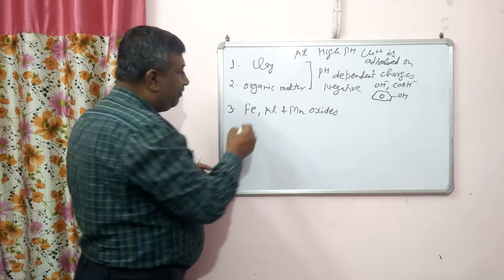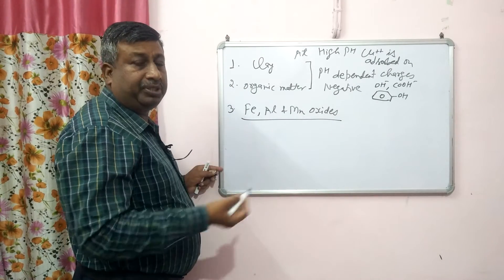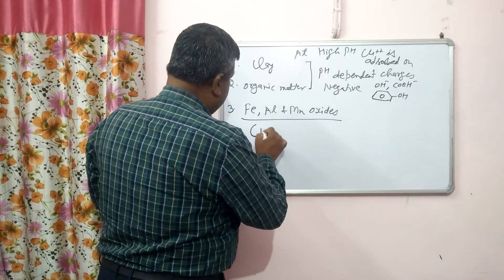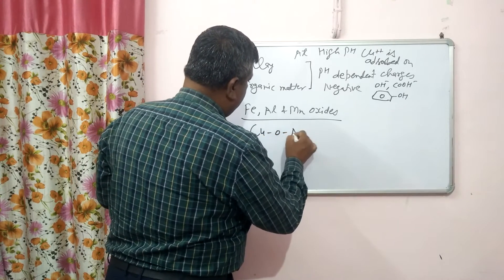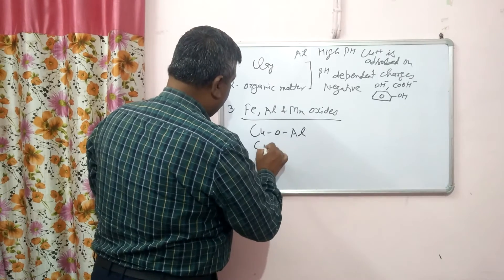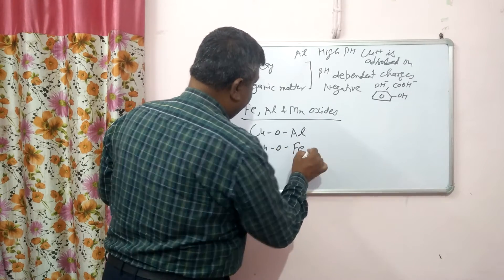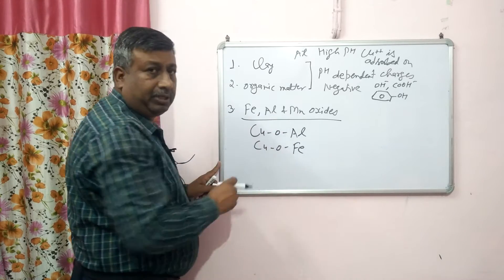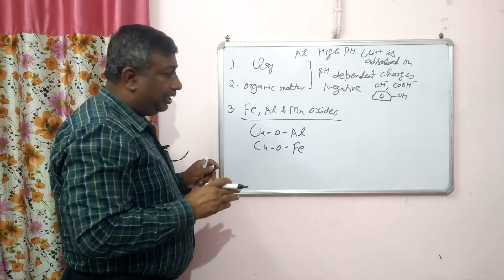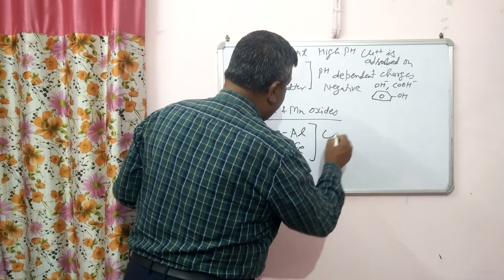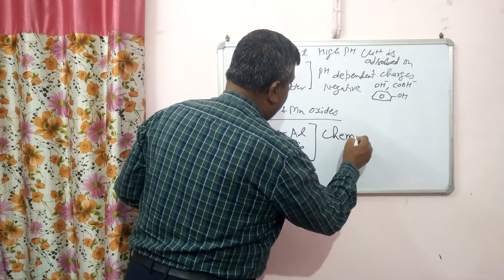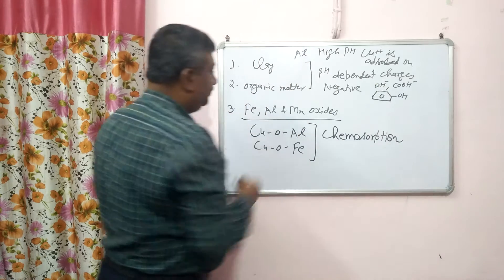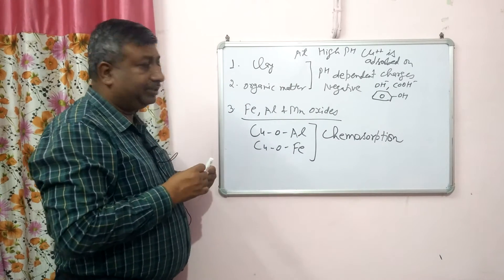In the case of aluminium and iron oxides, there is more formation at higher pH. When pH is more than 7, copper is bound via oxygen bonds — Cu-O-Al and Cu-O-Fe. This is the bound form and is a strong bond, also known as chemosorption. So there is chemosorption of copper on aluminium and iron oxides.